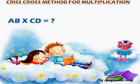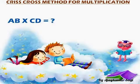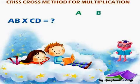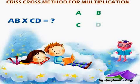We have to find out the answer for AB into CD. To find out this answer, place A and B like this and C and D like this.